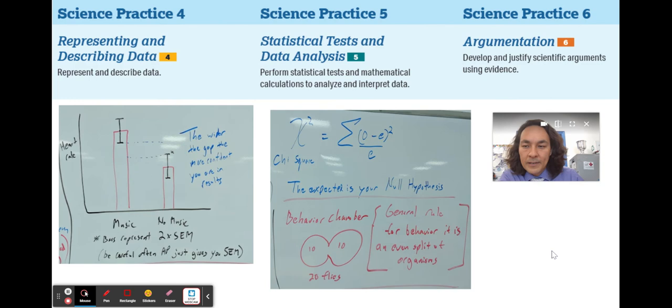We should be able to describe data and know when to make bar graphs, line graphs. We should be able to compare the standard error, the mean for different populations and see whether or not those results are statistically significant. So it's moving into science practice five here.